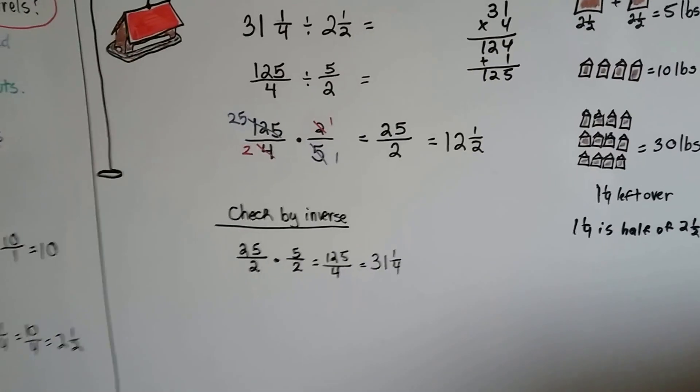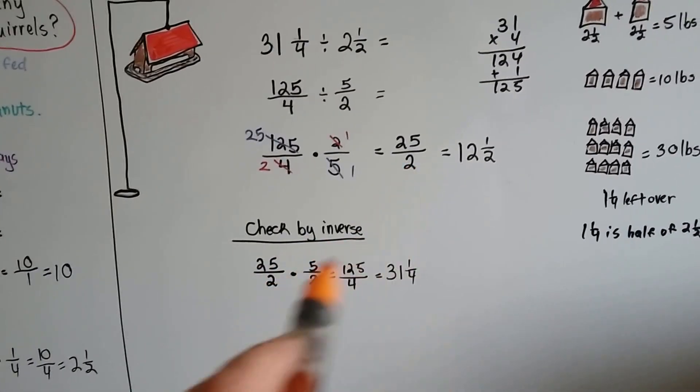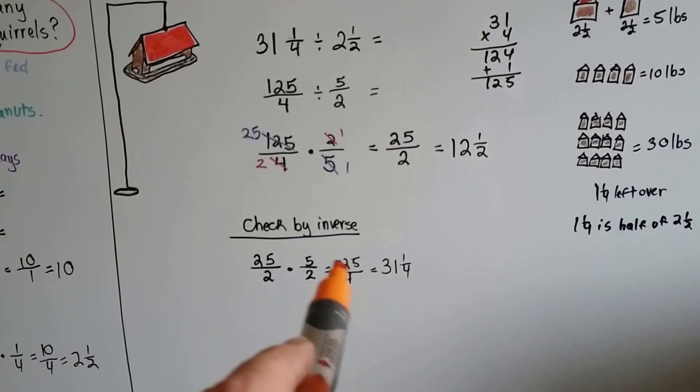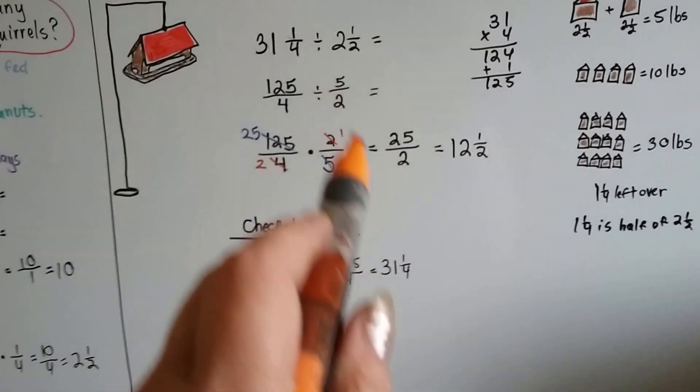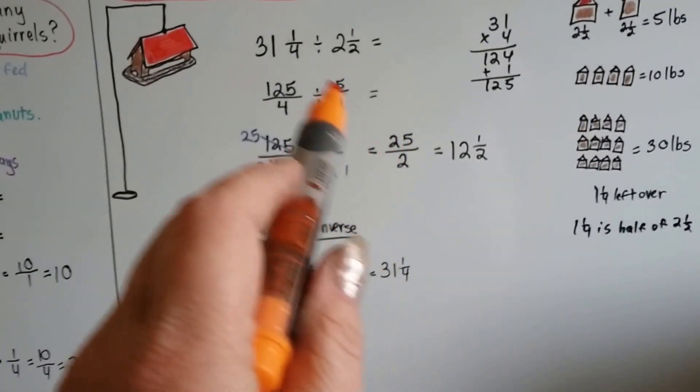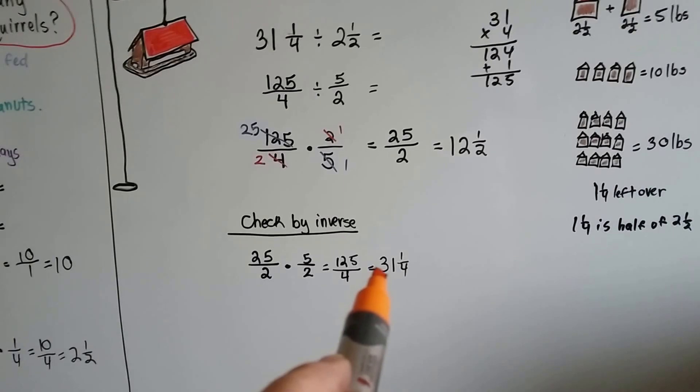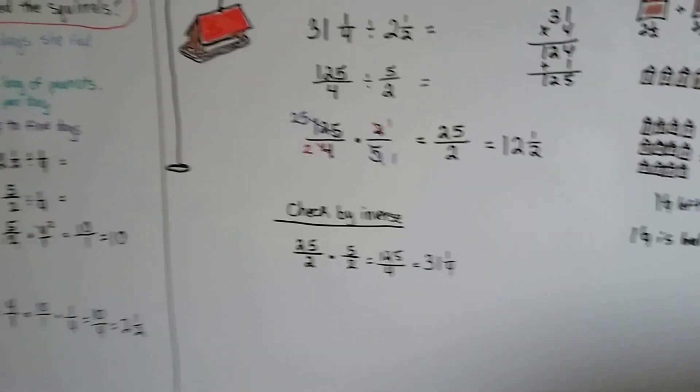And we check it by doing the inverse. We keep it in its improper form, twenty-five over two. And we're going to multiply it by five over two. Not the reciprocal. We multiply it by the five over two. And we get one twenty-five over four, which reduces to thirty-one and a quarter.